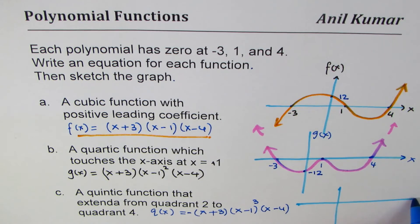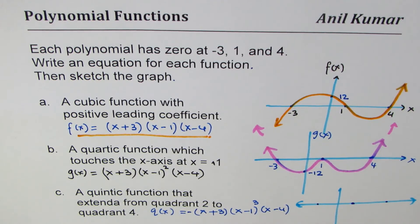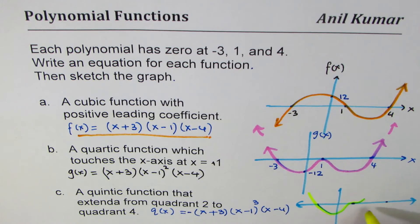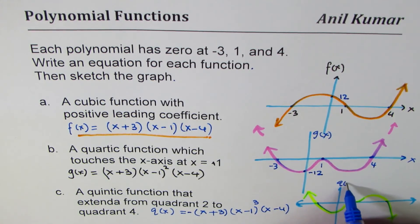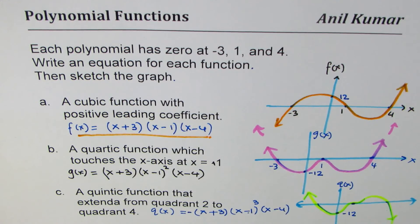Let me sketch the quintic. We are moving from quadrant 2 to quadrant 4. We have a linear zero at minus 3, a cubic zero at 1, and a linear zero at 4. Since this is linear, the graph just crosses at minus 3 like this; at 1 it's cubic so it turns like this — that's the cubic zero — and then at 4 it goes like this. The y-intercept: 3 times 1 cubed times minus 4 is minus 12, and with the negative sign out front, three negatives make it negative 12. That is the graph of the quintic function q of x.